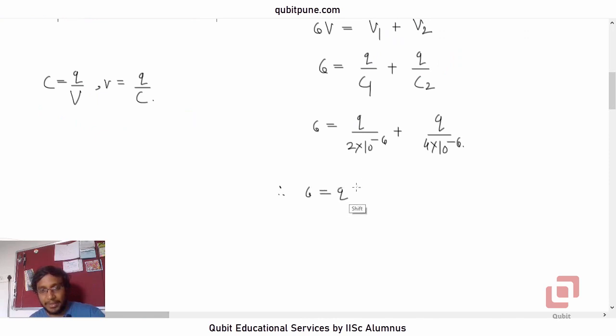So 6 is equal to Q upon - what is C1? C1 is the capacitance of the first capacitor, that's 2 microfarad, and C2 is 4 microfarad. Therefore, 6 is equal to Q into bracket, or we can take 10 to the -6 right here. In the bracket, we'll have 1 upon 2 plus 1 upon 4. What will that be? 1 upon 2 plus 1 upon 4 is 3 by 4. So Q will be equal to 6 into 10 raised to negative 6 into 4 by 3. 6 by 3 is 2, 2 into 4 is 8. So 8 microcoulomb will be the charge.